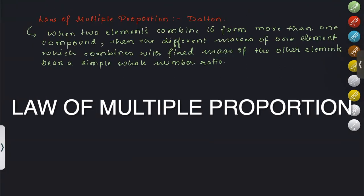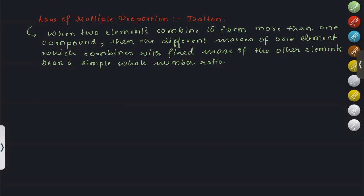The next law is the Law of Multiple Proportion, proposed by Dalton himself. When two elements combine, they can form more than one compound. For example, nitrogen and oxygen can form N₂O, NO (nitric oxide), N₂O₃, NO₂, or N₂O₅ — many compounds from the same two elements.